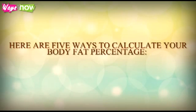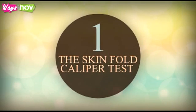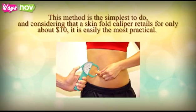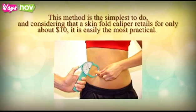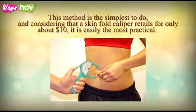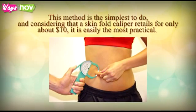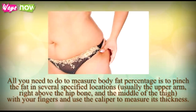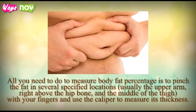Here are 5 ways to calculate your body fat percentage. 1. The Skin Fold Caliper Test. This method is the simplest to do, and considering that a skin fold caliper retails for only about $10, it is easily the most practical. All you need to do to measure body fat percentage is to pinch the fat in several specified locations, usually the upper arm, right above the hip bone, in the middle of the thigh, with your fingers.